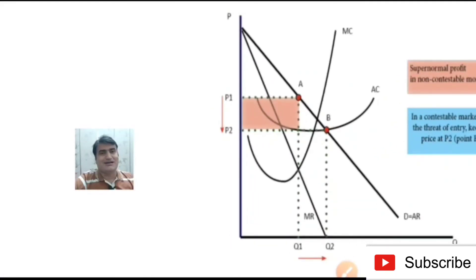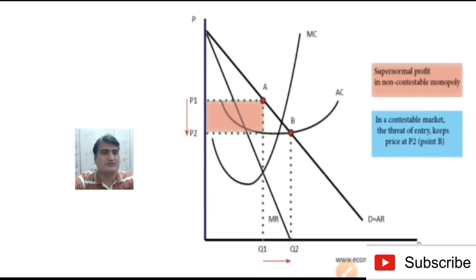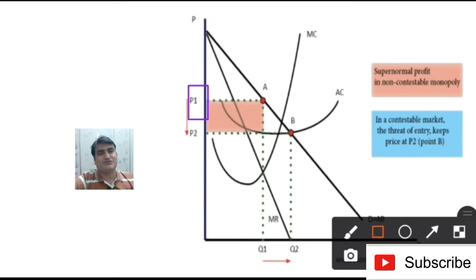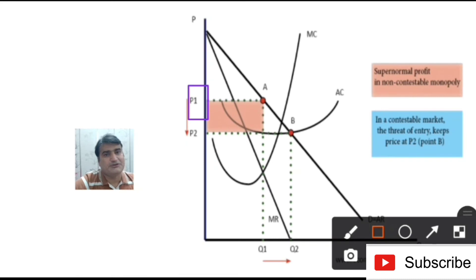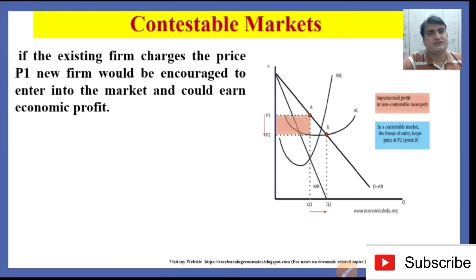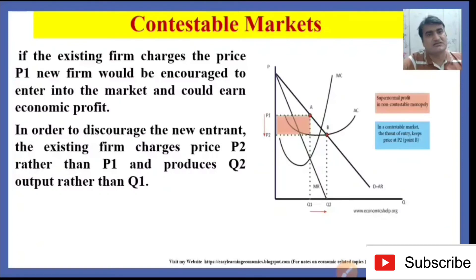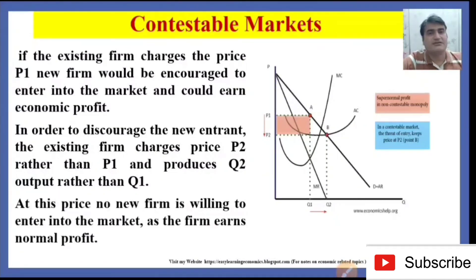Looking at the graph, output is shown on the x-axis and price on the y-axis. If the firm charges price P1, it earns supernormal profit, which would encourage new firms to enter the market to earn economic profit. If the firm decreases price to P2, new firms will not enter the market. It is this contestable market threat of entry that keeps the price at P2. The existing firm therefore charges P2 rather than P1 and produces Q2 output rather than Q1, at which price no new firm is willing to enter as the firm earns only normal profit.